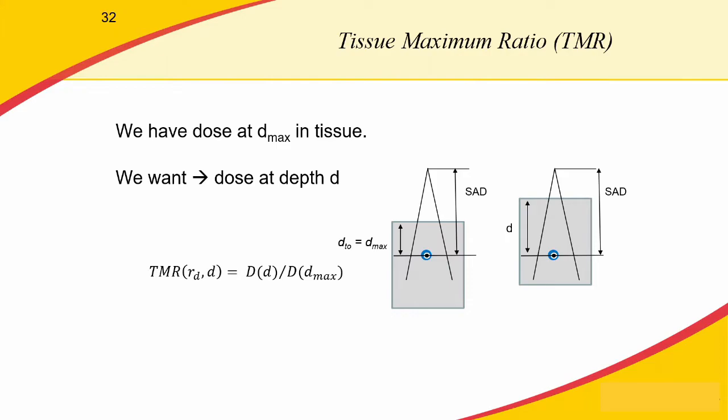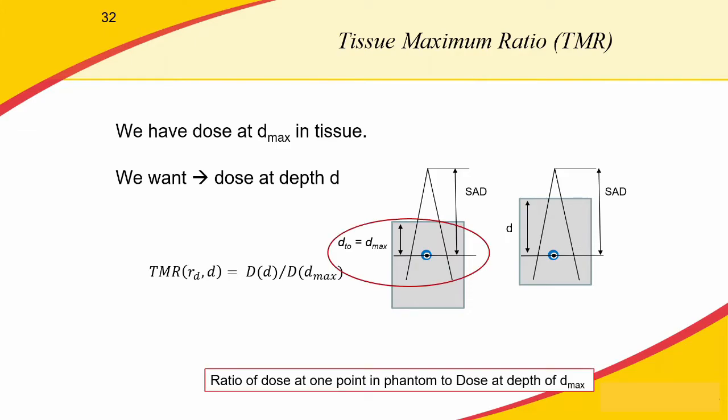The tissue maximum ratio, or TMR, is a special case of the tissue phantom ratio. If your reference point T0 where you made your original measurement is at D max for your beam energy, then the ratio is called the tissue maximum ratio — because you're measuring the ratio of the dose at a given depth to the dose at D max within the phantom.